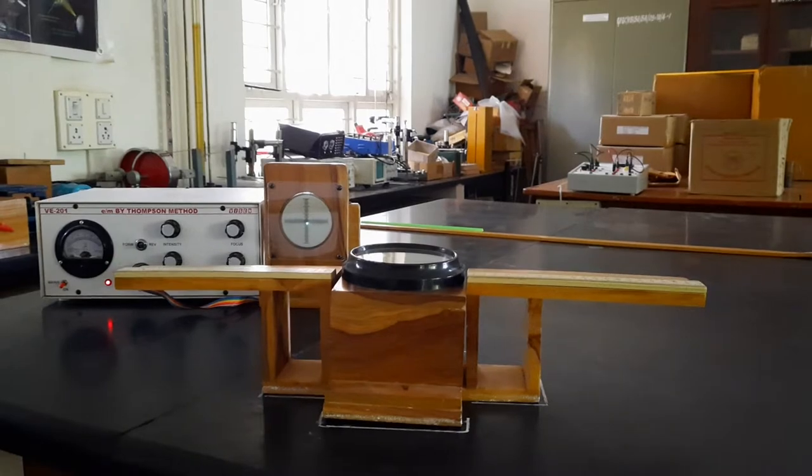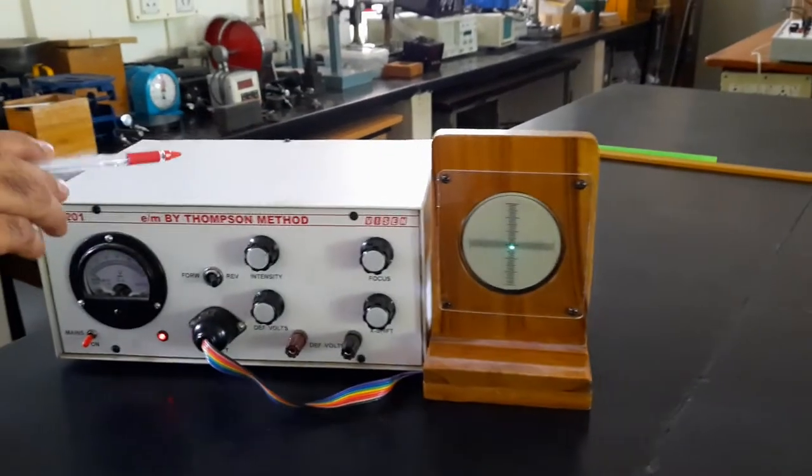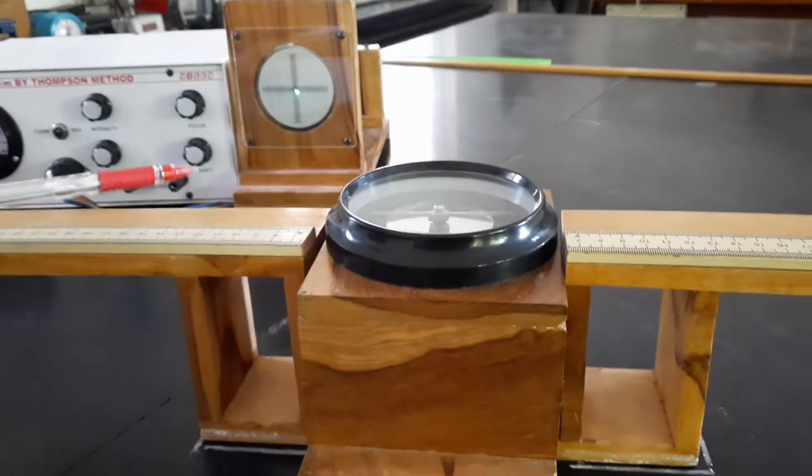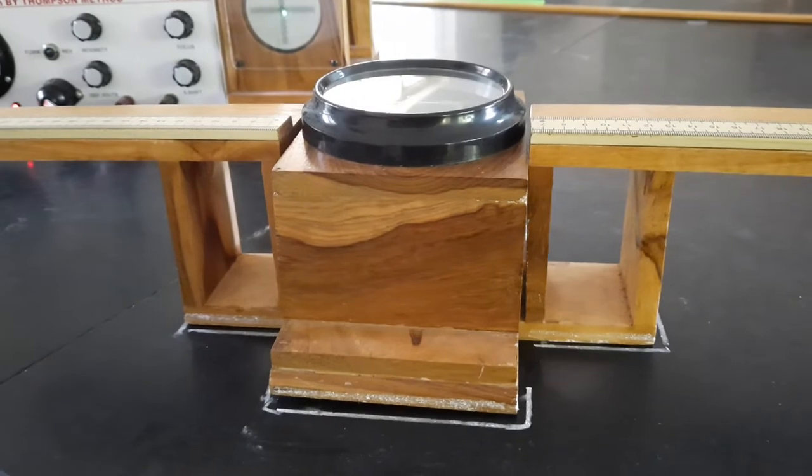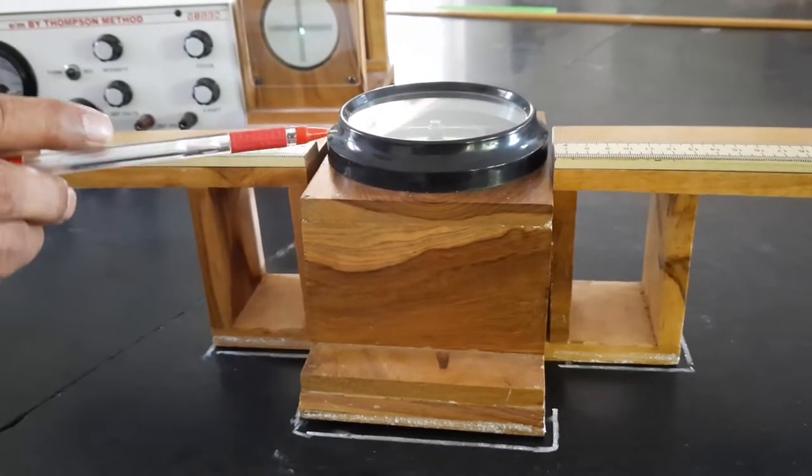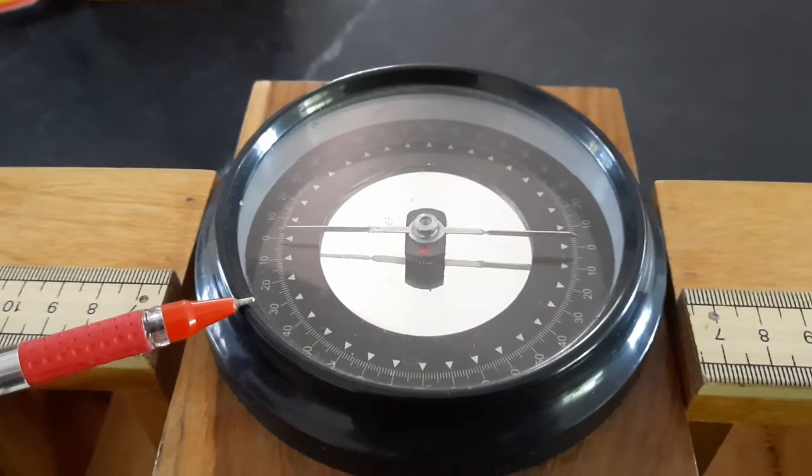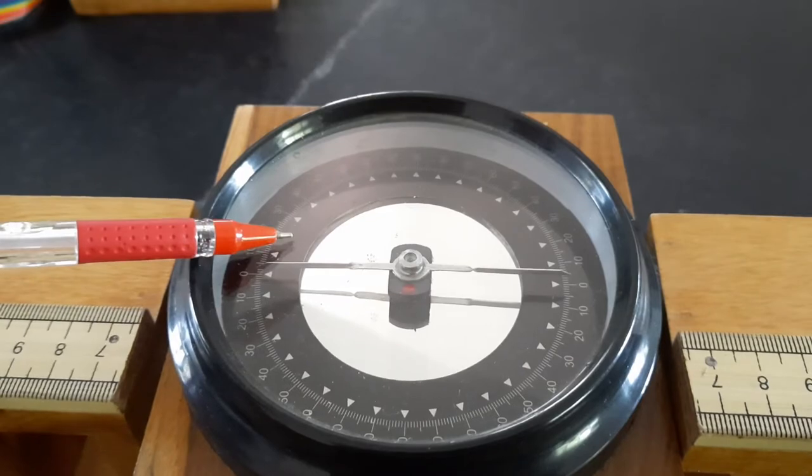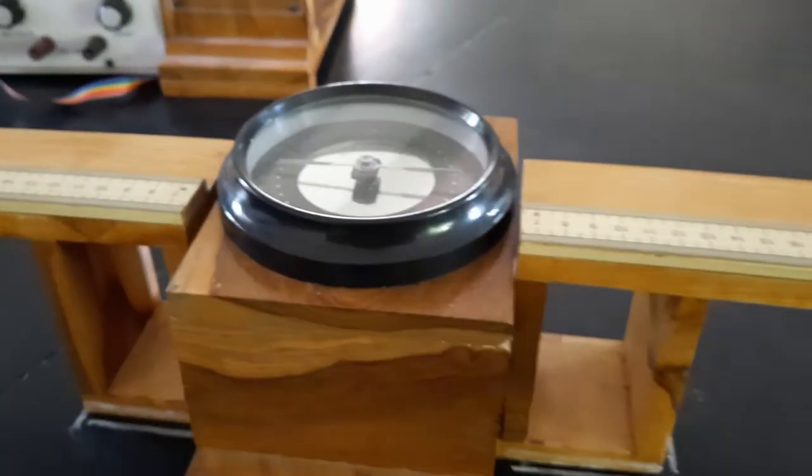This is the magnetometer and CRO with dedicated power supply. This is the magnetometer with the scale and arm. This is the wooden box, which contains the compass box and magnet. This is the aluminum pointer. This is the main part, one component of the equipment.